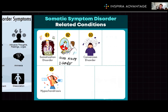Next, we have illness anxiety disorder, which is the preoccupation with thoughts of having or developing a serious illness. A person with illness anxiety disorder might be walking around constantly thinking they're going to get pancreatic cancer, obsessing about developing some disease, which makes it hard for them to live their lives.